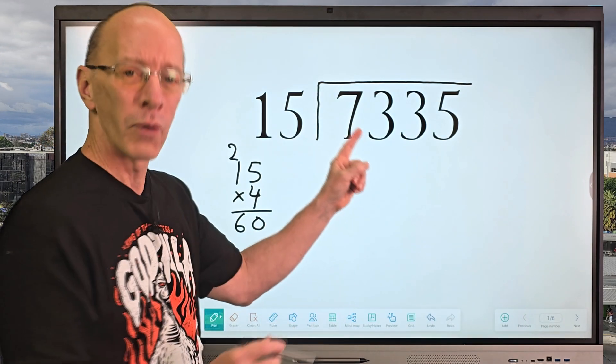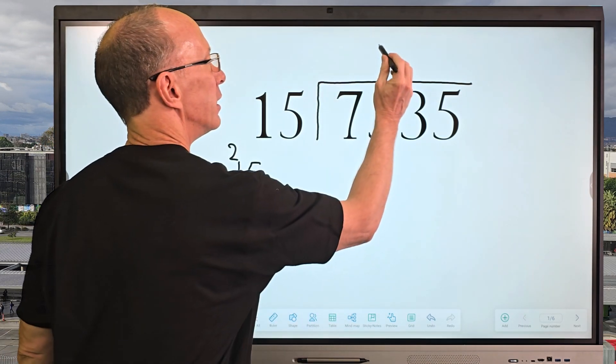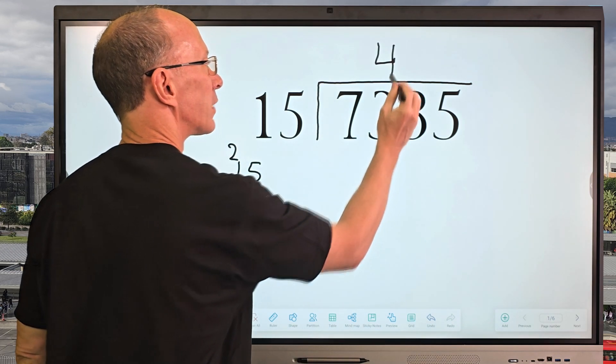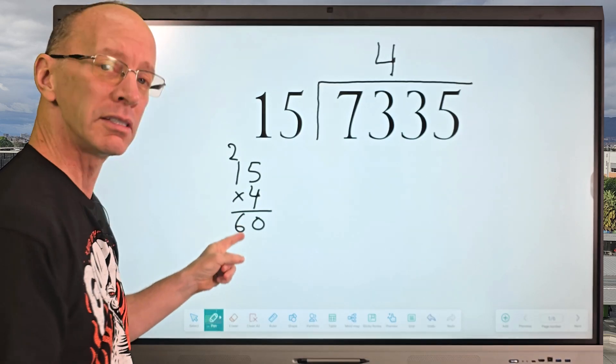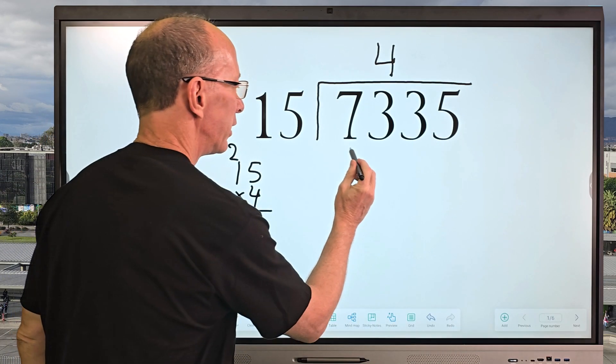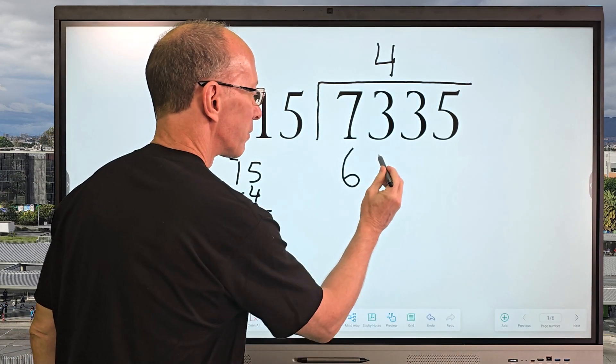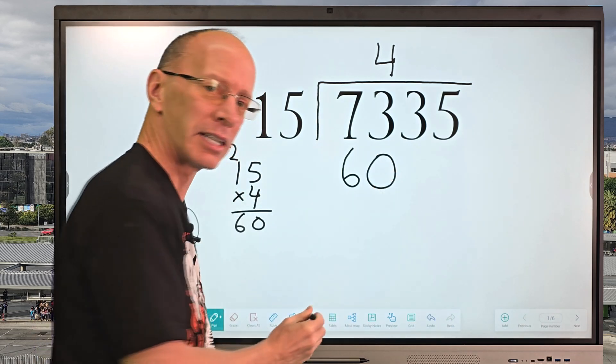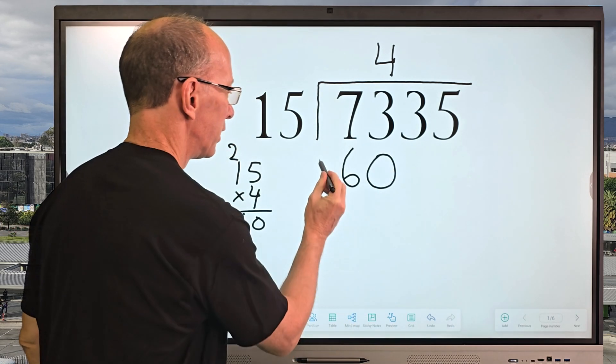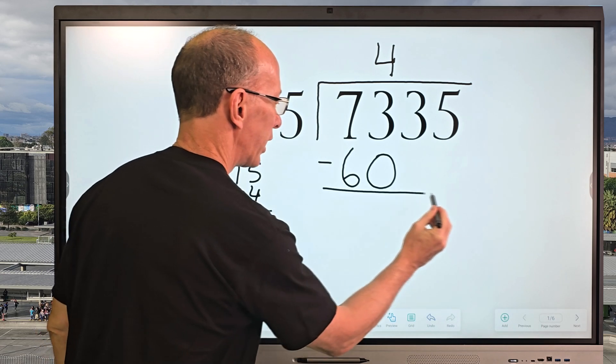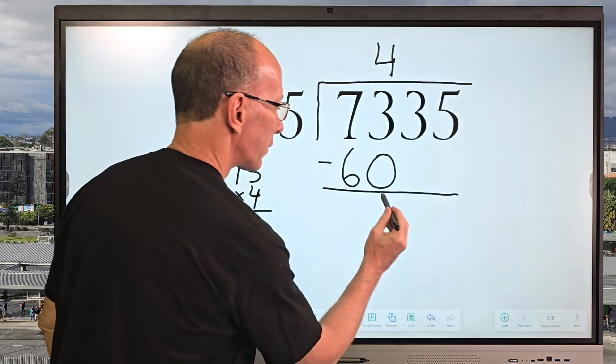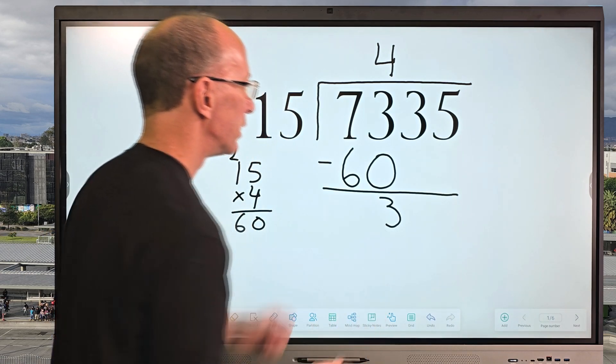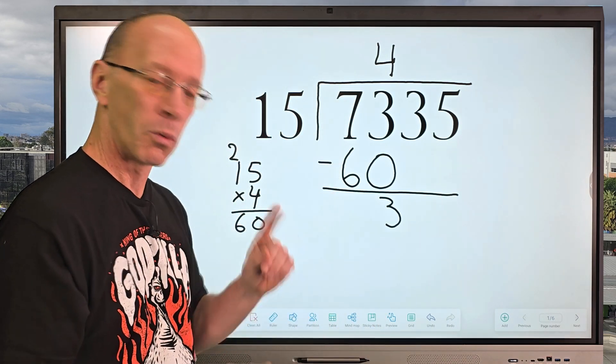So I'm going to go ahead and put the 4 right above that 3 right here. And then I'm going to go ahead and take 4 times 15, which is 60. So I go ahead and write 60 right here. And then my next step is going to be subtraction. So I'm going to go ahead and subtract these numbers.